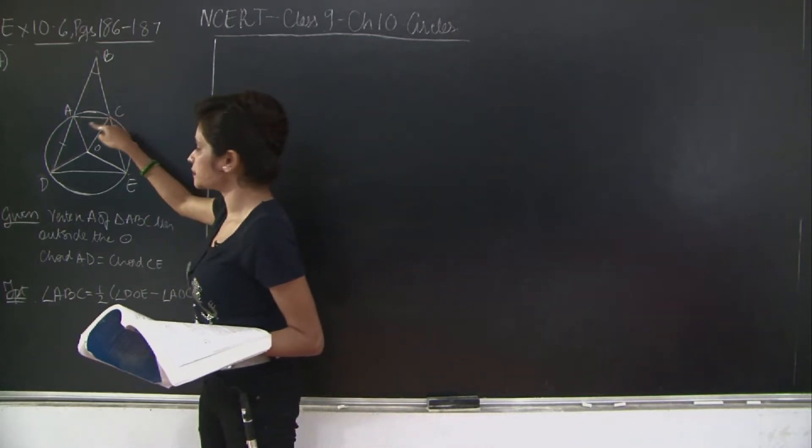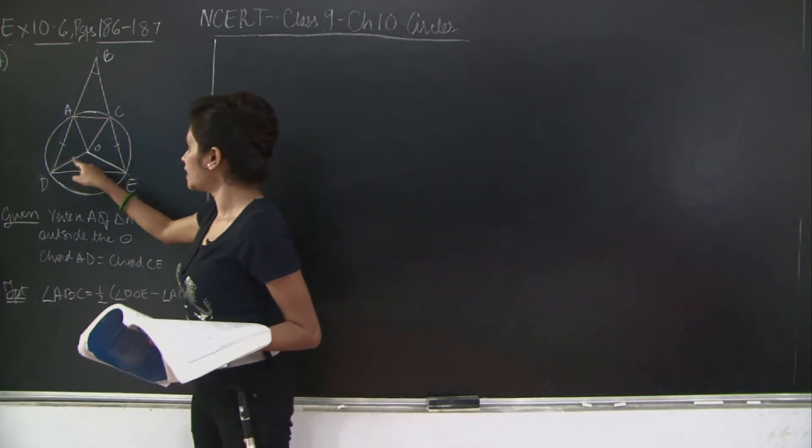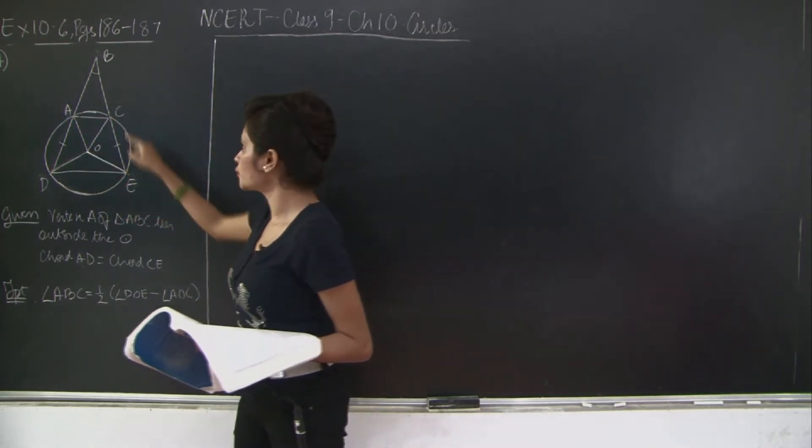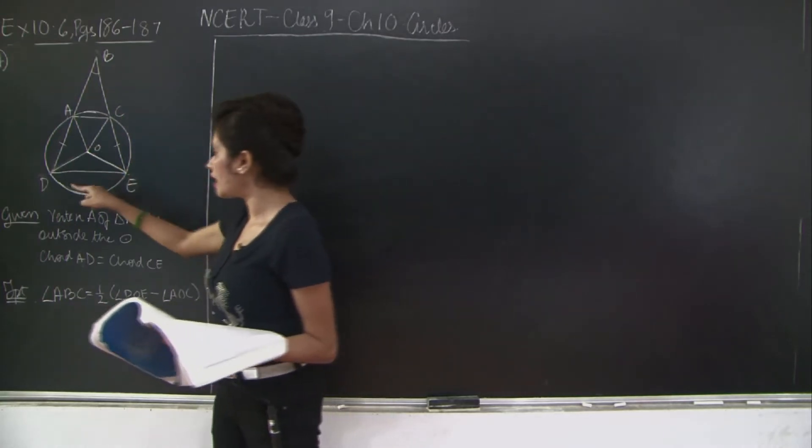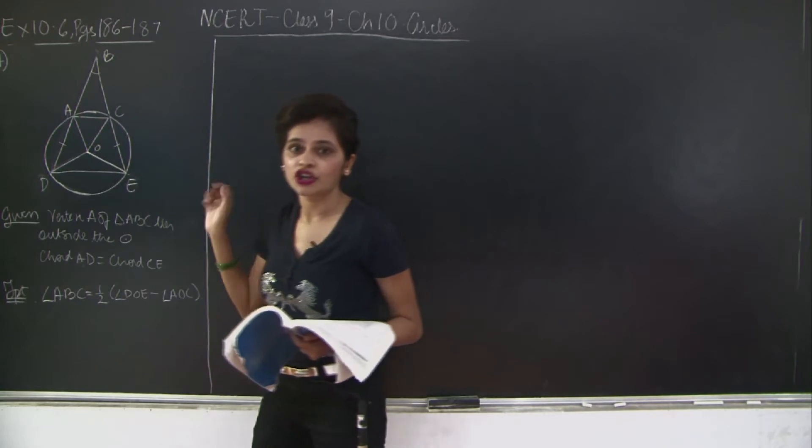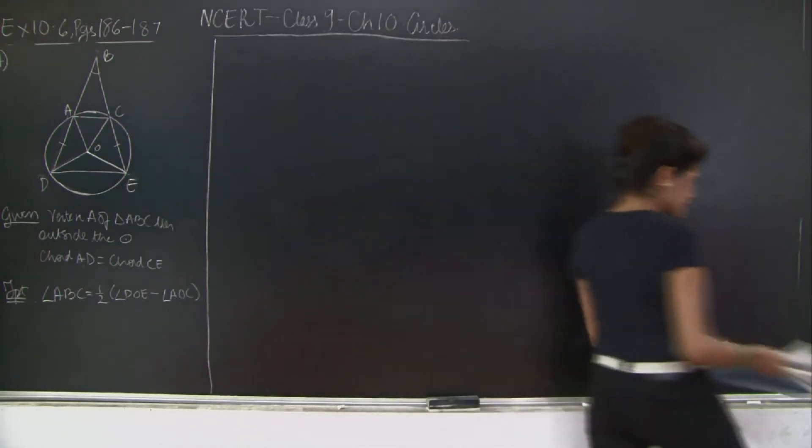So let's understand: AC is subtending angle AOC and DE is subtending angle DOE. So you need to prove that angle ABC is equal to half angle DOE minus angle AOC. So how do we prove this? Let's take a look.